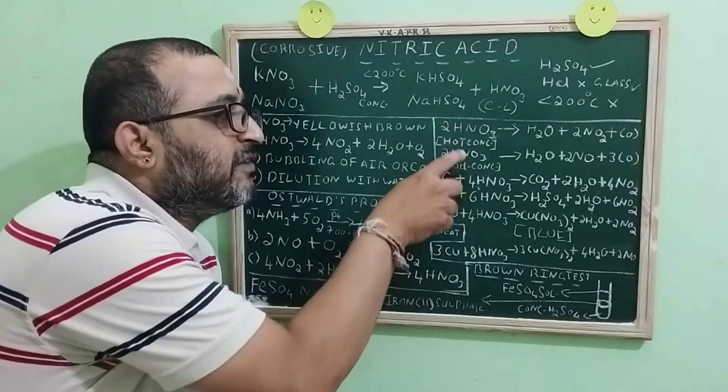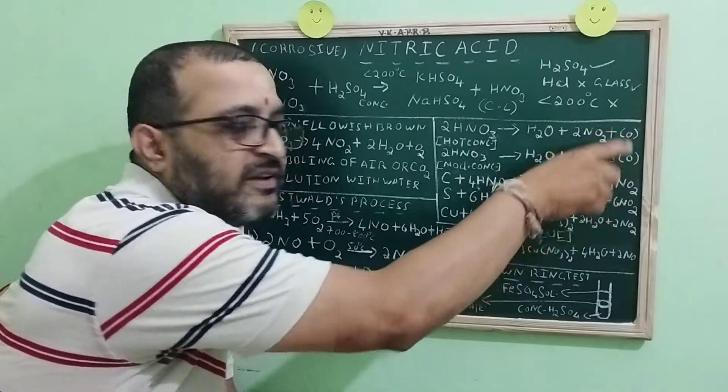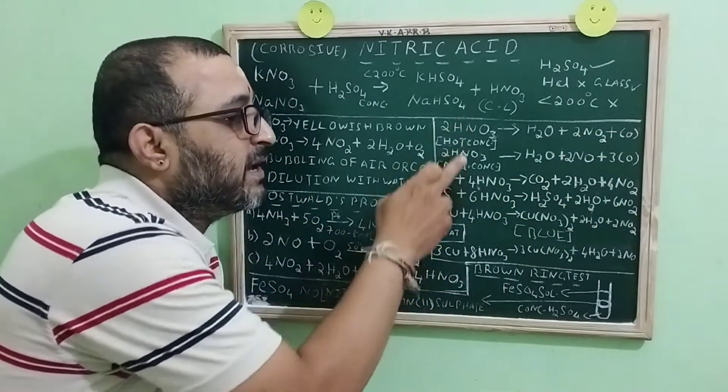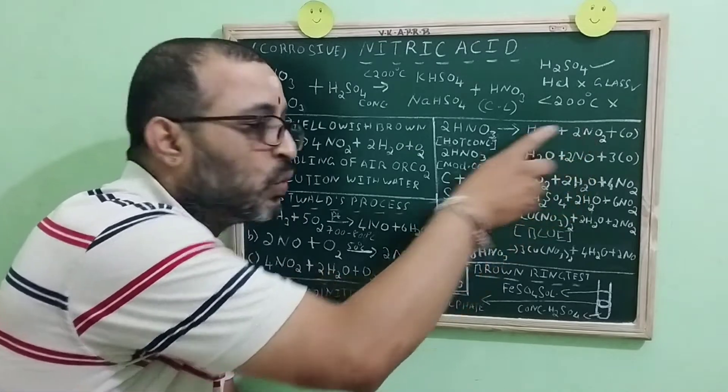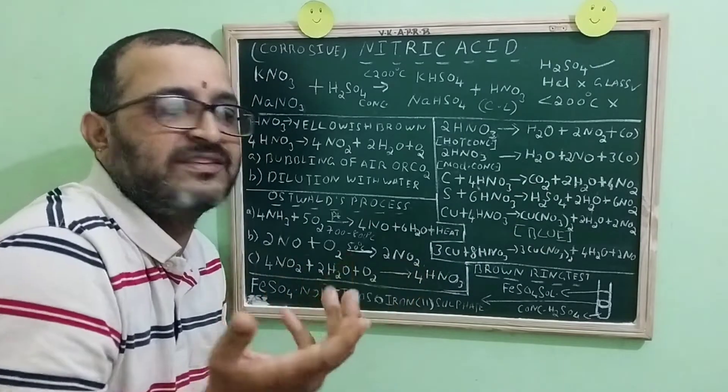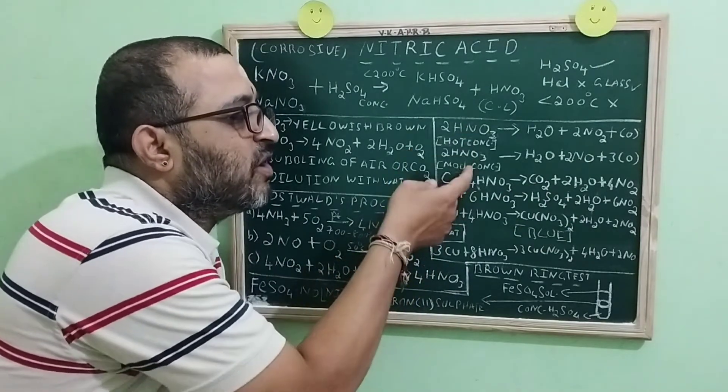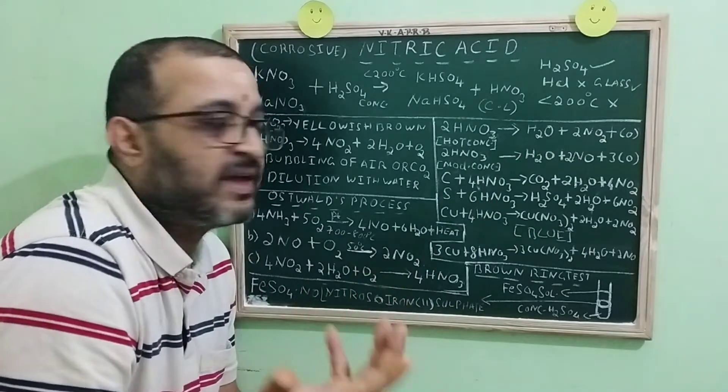You can observe these two reactions. Nitric acid, right? In both the cases, nascent oxygen is produced. But in one case, we are getting NO2. That is, the reduced product is NO2. And in one more case, the reduced product is NO. So why it is different? Very simple. You change the concentration of nitric acid, you will get different reduced products.